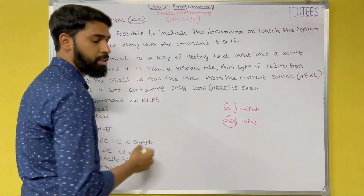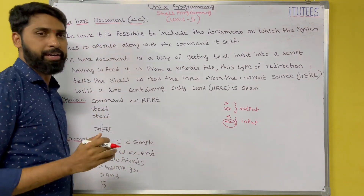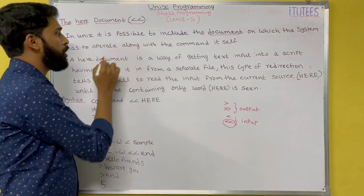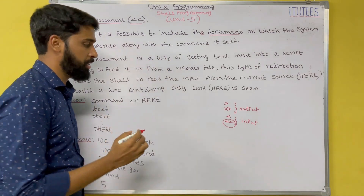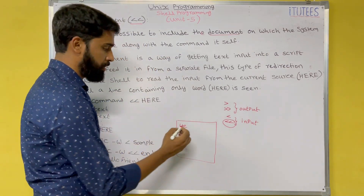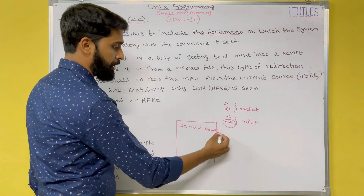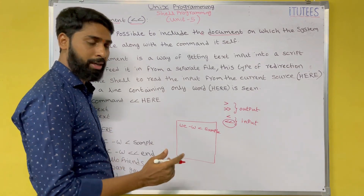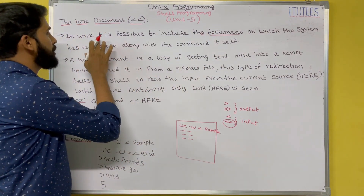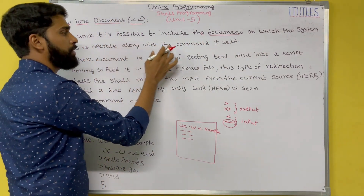The double less than symbol is going to be used for here document. In Unix, it is possible to include the document on which the system has to operate along with the command itself. For example, normally we write commands — wc is the command and we can operate on some file, say the file name is sample. Now, if I want to give the content in this place only, that is called a here document.